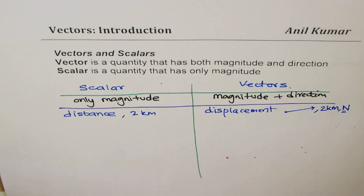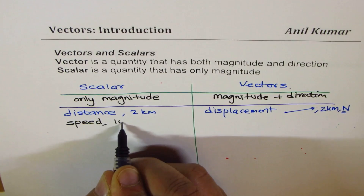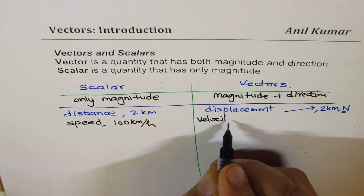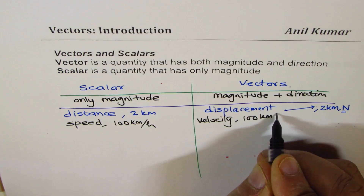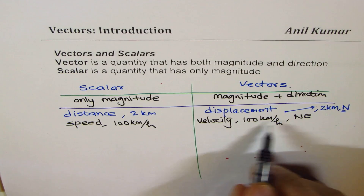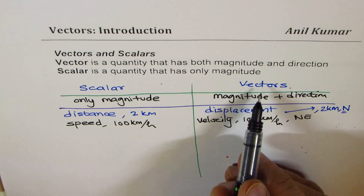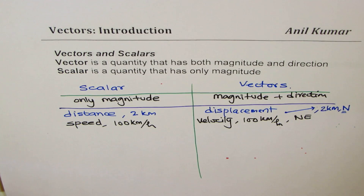Similar to this is speed. Speed of 100 kilometers per hour. On the other end, we have velocity. When you say velocity, you say 100 kilometers per hour and you have to add a direction — let's say northeast. So that was the direction in which the movement was there. This makes it a vector.